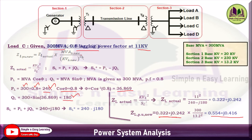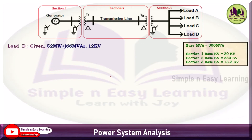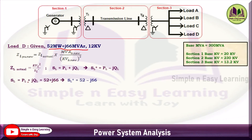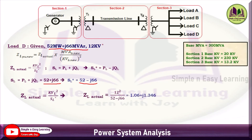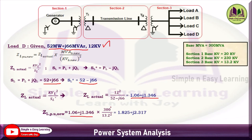Load D: given directly as 52 MW + j66 MVAR at 12 kV. So P_L = 52, Q_L = 66; S_L = 52 + j66; S_L_conjugate = 52 − j66. Z_L_actual = 12² / (52 − j66). Z_L_pu = Z_L_actual × 300 / (13.2²) at Section 3 base kV.